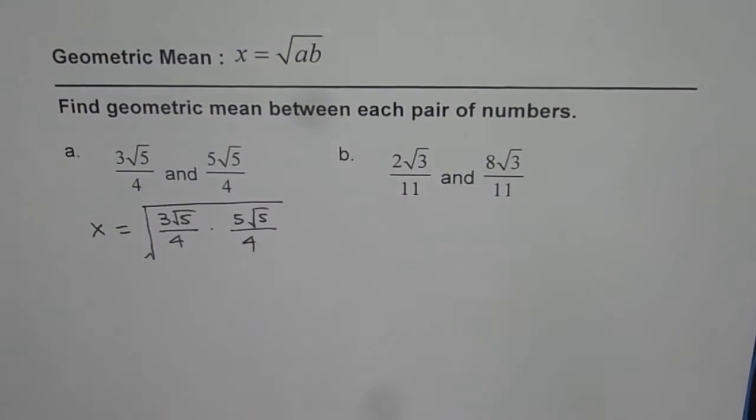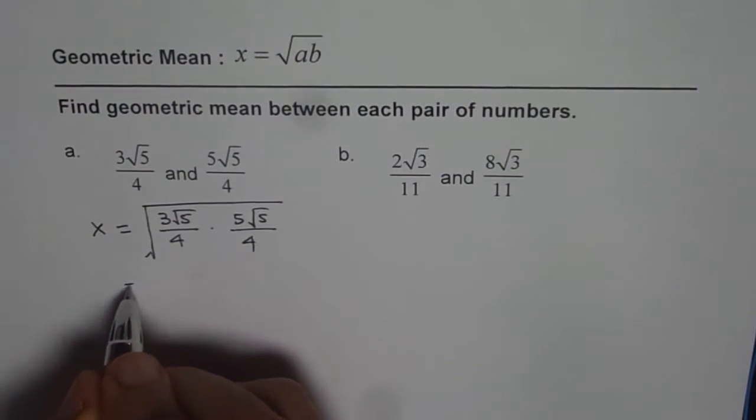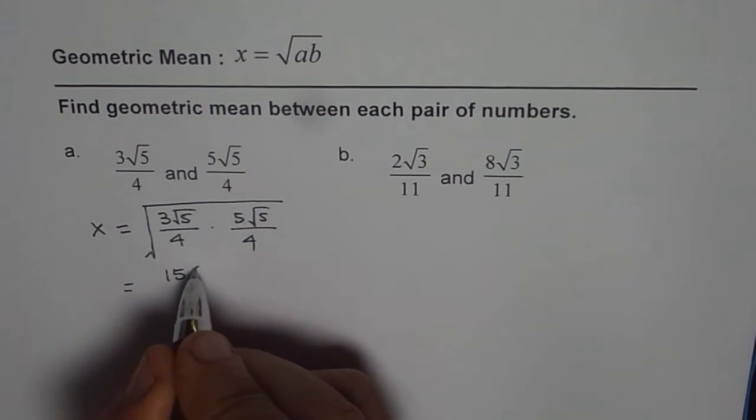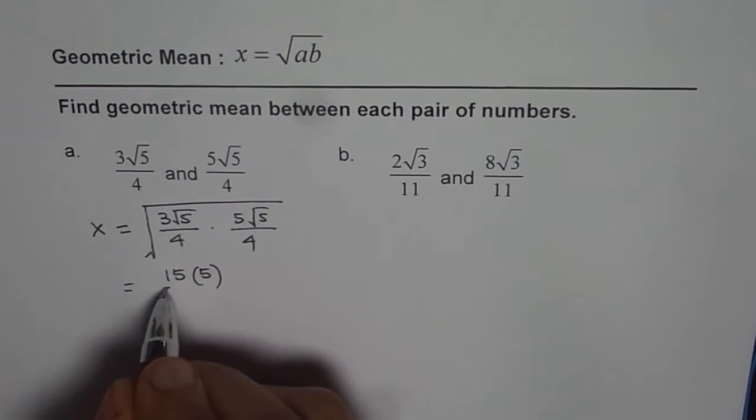That is what geometric mean is. Now, we can write this as 3 times 5 as 15, times square root 5 times square root 5 is 5 over 4 square. Square root.